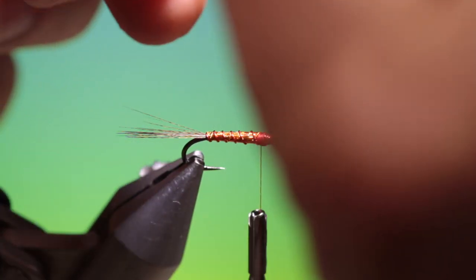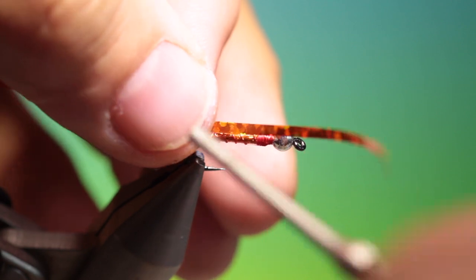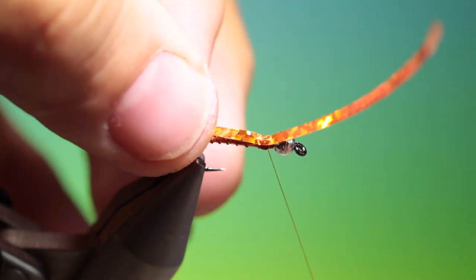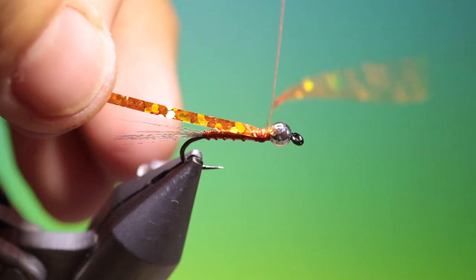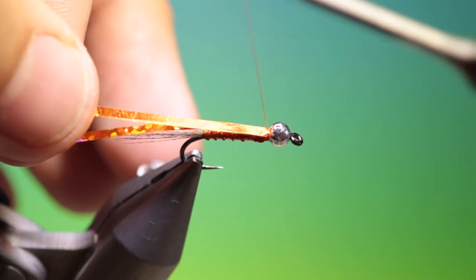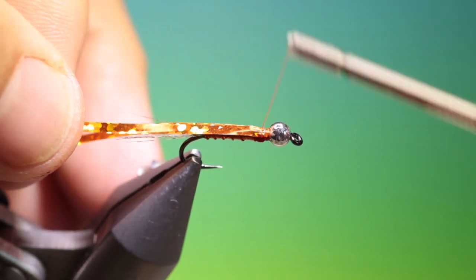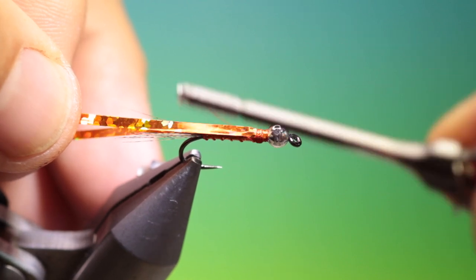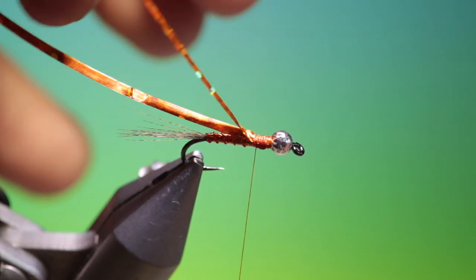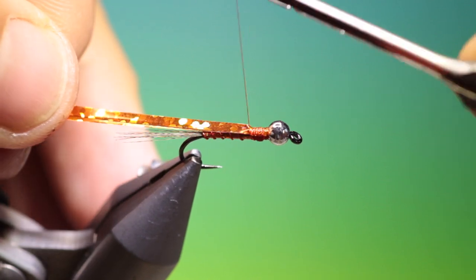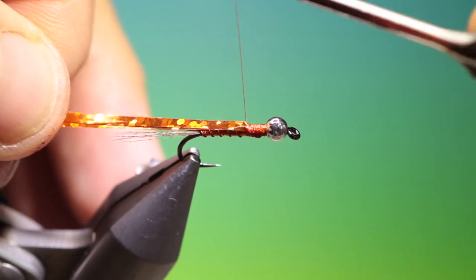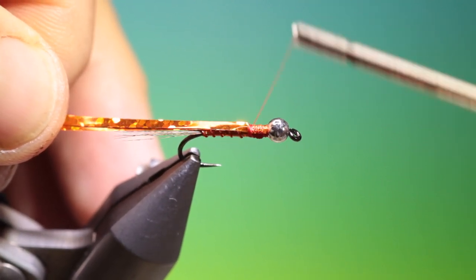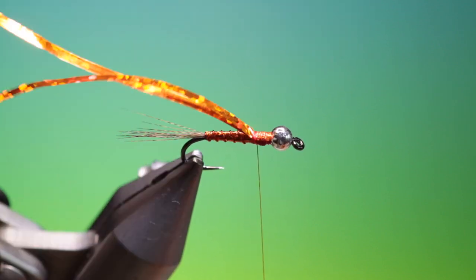Another piece of holographic tinsel. We'll just tack this in on top of the hook shank. This is for the wing case. Go back again, doubled it over so you've got two pieces.